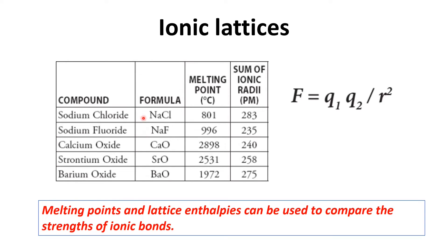For example, if I talk about NaCl, the sodium atom loses one electron and it becomes a sodium positive ion, and that electron is gained by the chlorine atom and it becomes a chloride ion, that is Cl⁻. So there is a force of attraction between the sodium ion and the chloride ion.